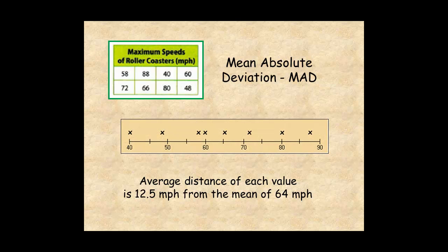Here's a graph of the data, here's the mean, and here's the deviation, 12.5 miles per hour each side of the mean. Notice that half of the data values fall within this area.